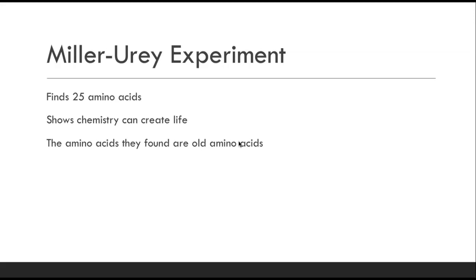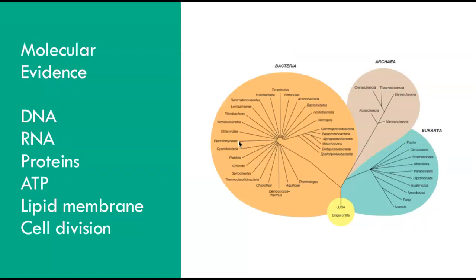The amino acids they find are considered to be 'old' amino acids — they show up in the genes of the last universal ancestor that we know of. If we were to look at the genetic information of the last universal common ancestor, they would have those same amino acids, and most organisms would have these same amino acids. This begins to talk about molecular evidence — things like how the DNA of organisms relate to each other, how their RNA does, what types of proteins they can make, ATP as the cellular energy currency, their lipid membranes, and how they do cell division.